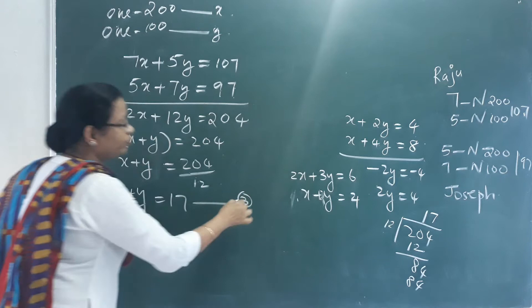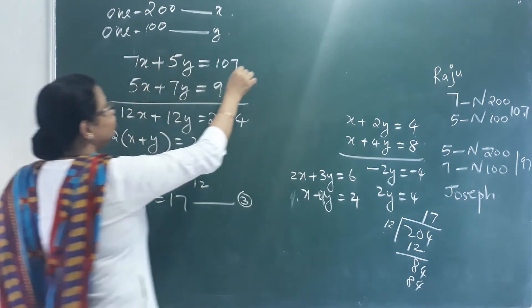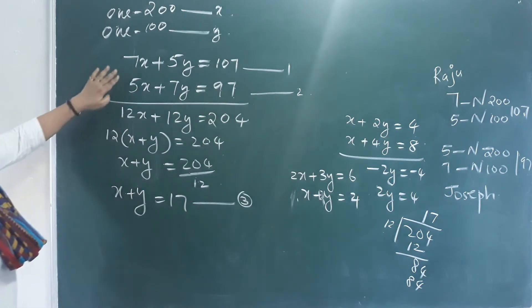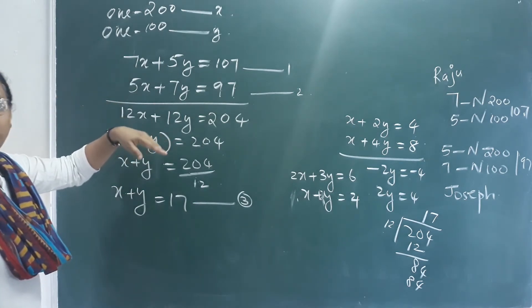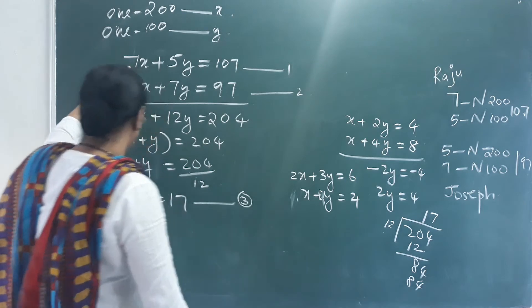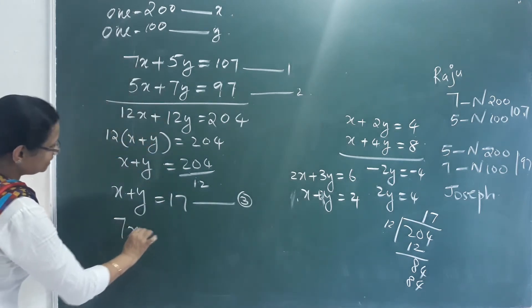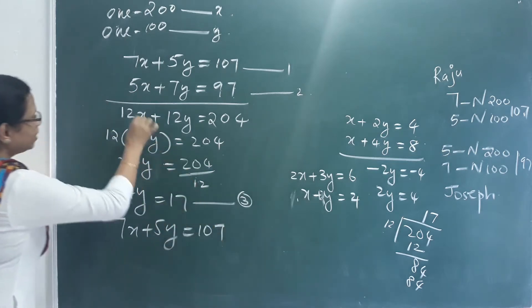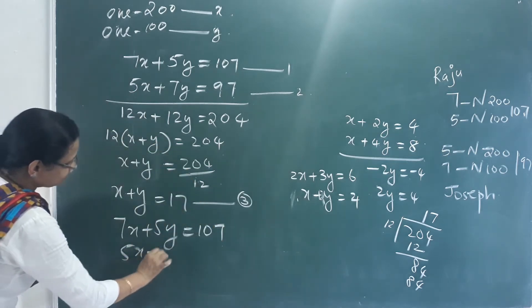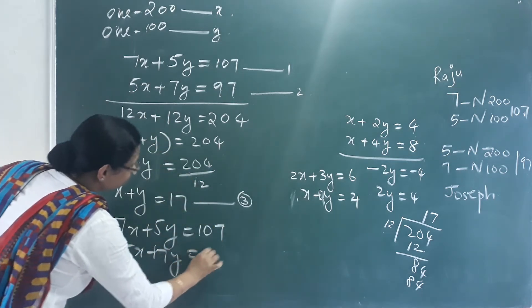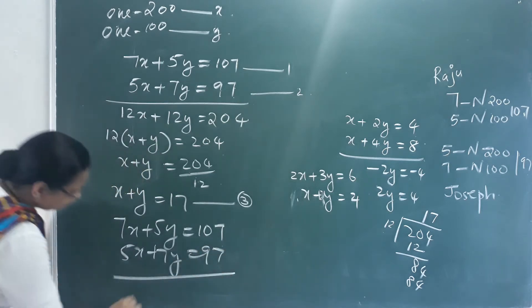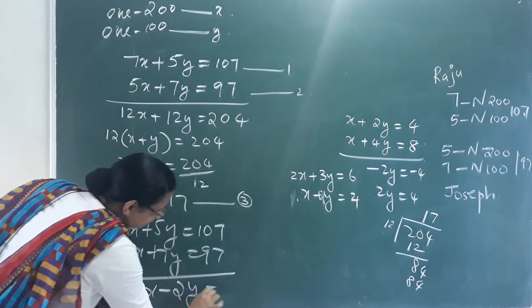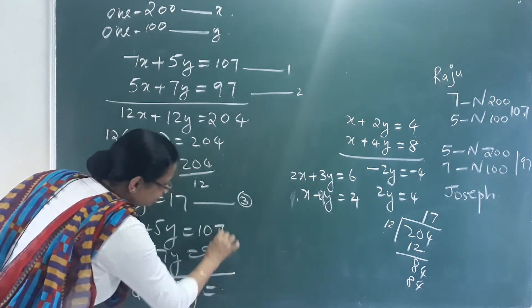Now using equations 1 and 2, we subtract. 7x plus 5y equals 107, minus 5x plus 7y equals 97. Subtracting gives 2x minus 2y equals 10.